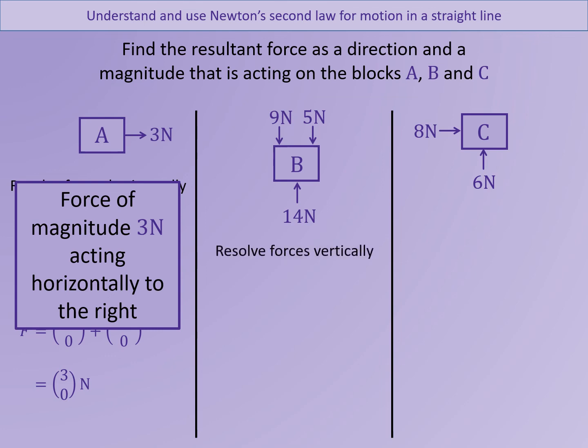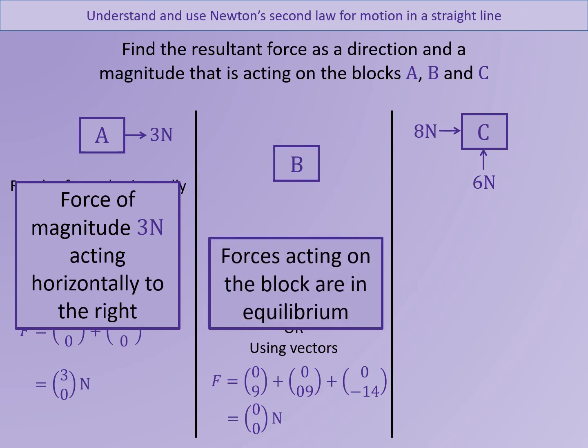In question two, we have forces acting vertically. If we consider downwards as positive and upwards as negative, we can add the forces together. Nine plus five minus 14. This gives us zero. Using vectors, we could add the forces together here. This again gives us zero, which tells us that the object is in equilibrium. Remember that equilibrium means that the resultant force is zero.